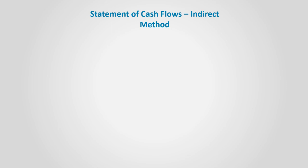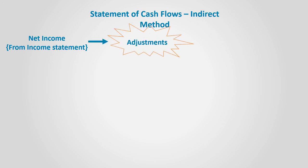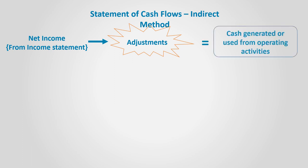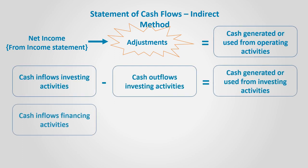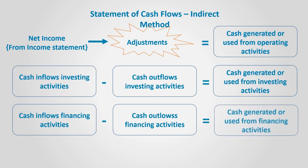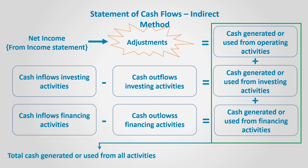To calculate the cash flow from operating activities using the indirect method, we start with the net income as presented on the income statement, which is prepared using the accrual basis. Then, we carry out certain adjustments that will convert this net income figure into cash from operating activities. We will illustrate in a separate video how these adjustments are done and the concept behind them. After calculating the operating cash flows, we add to it the investing and financing cash flows to get the total cash generated or used from all activities, as in the direct method.